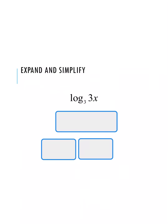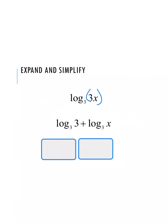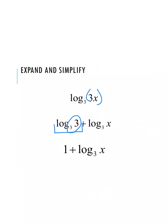Here's an example with a variable. We have log base 3 of 3 times x. Since we're multiplying two values, we expand by adding: log base 3 of 3 plus log base 3 of x. By property 4, log base 3 of 3 equals 1. The log base 3 of x has no further interaction or exponents, so it's fully simplified. Our final answer is 1 plus log base 3 of x.